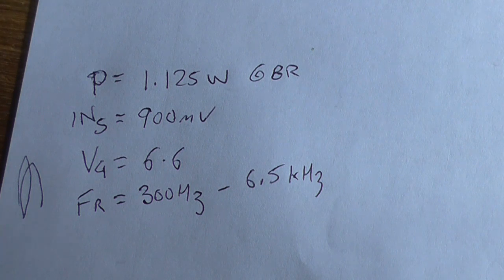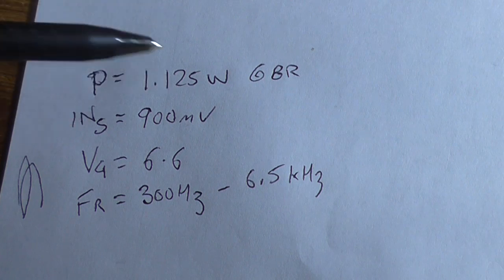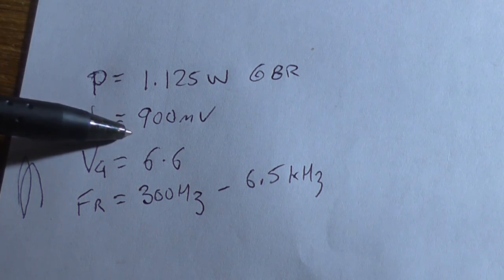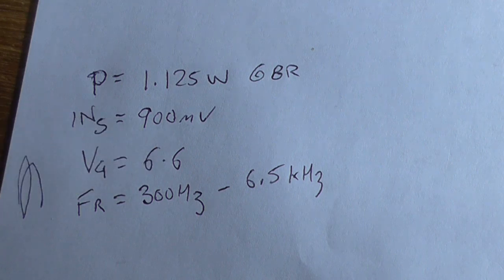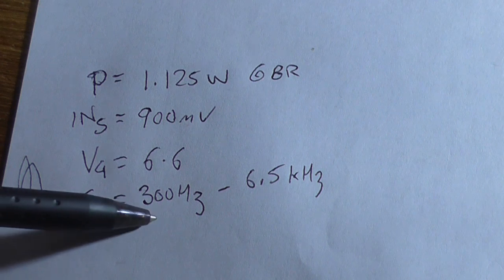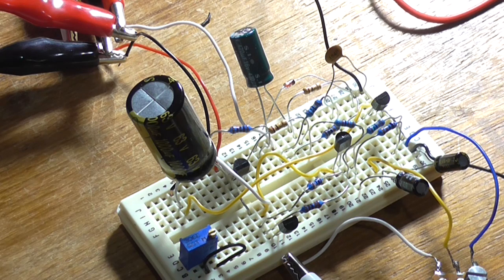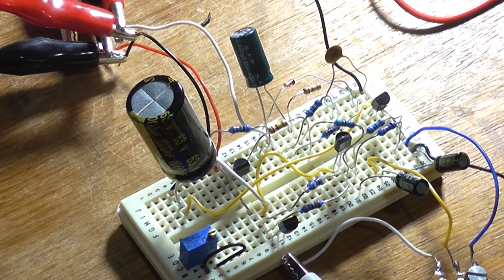And so here's my final conclusions, without making this video too long, because it's already going to be a nightmare to edit at the moment. Our power output into 8 ohms is roughly 1.125 watts, so that's well within what he said. The input sensitivity is around 900 millivolts for the full output. The voltage gain is 6.6, and the frequency response is around 300 hertz to 6.5 kilohertz. With those old transistors in, I could actually hear audible distortion last night, and I could on the other amplifiers, so there was something coming into play.